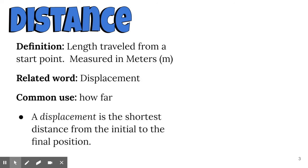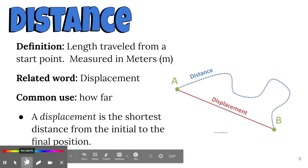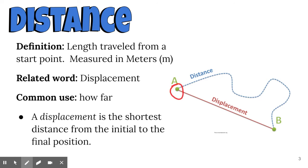Displacement is the shortest distance from the initial point to the final point. That's easy to see in this picture. Let's pretend you are at home at point A. Then you take the bus to school. This blue dotted line is the bus route. You go through neighborhoods, make all the stops, get everybody else on the bus, and finally get to school at point B.